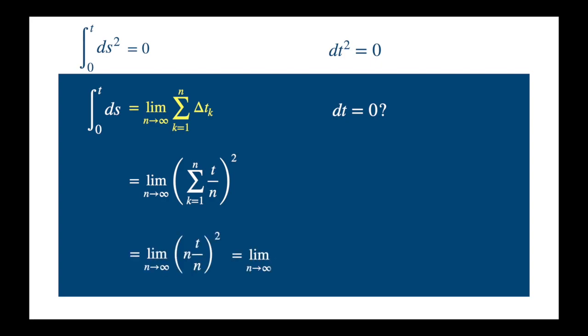The n's cancel. And we see the result is t squared, which is not 0. So we conclude that the mean square limit of dt is not 0. As we already know, it in fact equals dt.